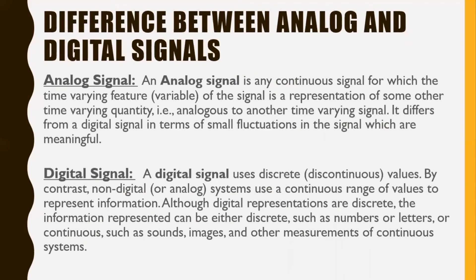Now we will discuss the difference between analog and digital signals. An analog signal is any continuous signal for which the time-varying variable of the signal is a representation of some other time-varying quantity. It differs from a digital signal in terms of small fluctuations in the signal which are meaningful. On the other hand, a digital signal uses discrete, discontinuous values, whereas non-digital or analog systems use a continuous range of values to represent information.